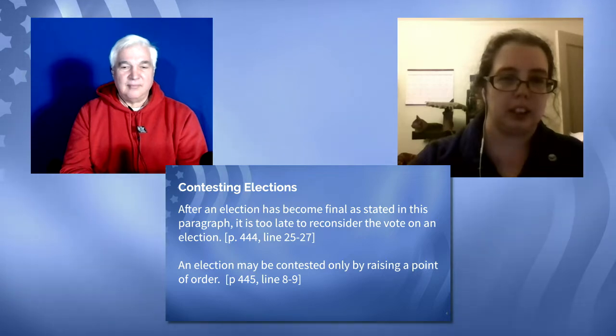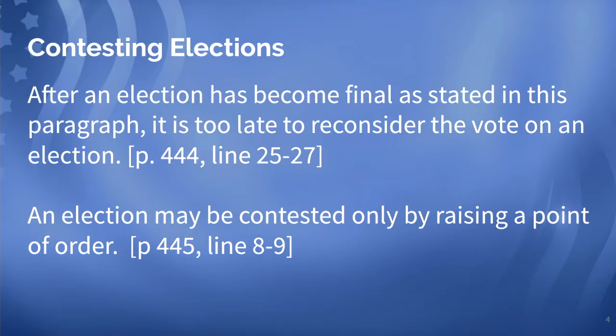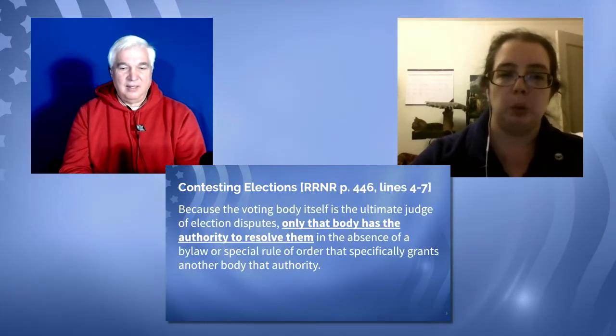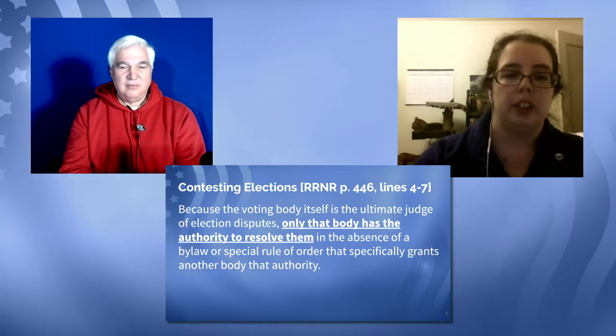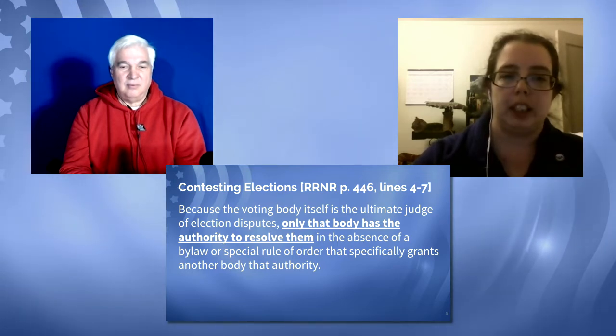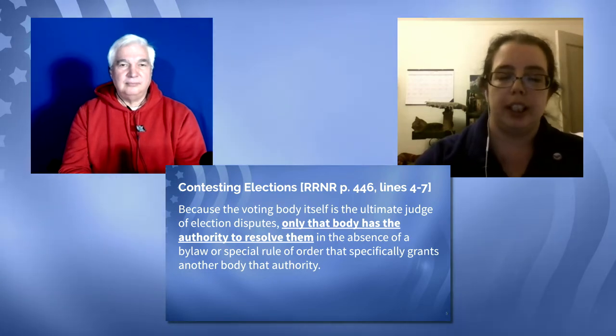Going to the next slide: contesting elections. After an election has become final, as stated in the paragraph on page 444, lines 25 through 27 in Robert's Rules of Order, 11th edition, it is too late to consider the vote on an election. But if you want to contest the election, a member can only do that by raising a point of order. Basically, the results are announced, the member is then required to stand up and say, 'Point of order, I have a problem with the election results because of X, Y, and Z.'